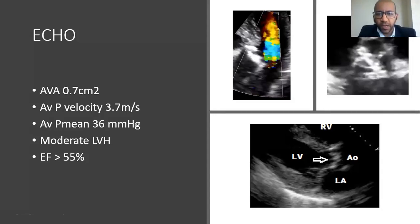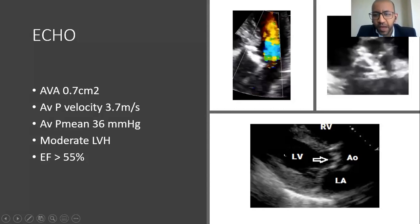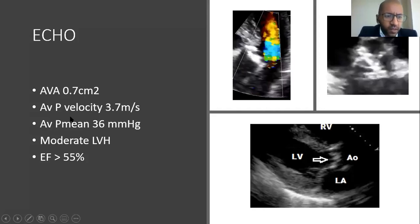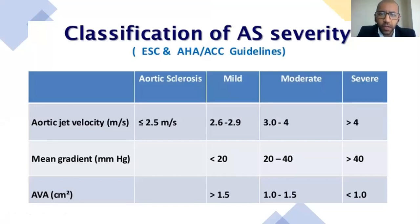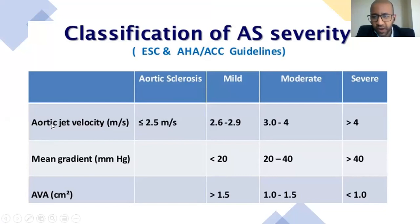Thank you very much, Dr. Jamil — a very nice run-through. She had an aortic valve area of 0.7 cm², a peak velocity of 3.7 m/s, and a mean gradient of 36 mmHg. She had LVH with a normal ejection fraction. Most guidelines — ESC, AHA, and ACC — classify severe AS as an aortic jet velocity of more than 4 m/s, mean gradient more than 40 mmHg, and aortic valve area less than 1 cm².